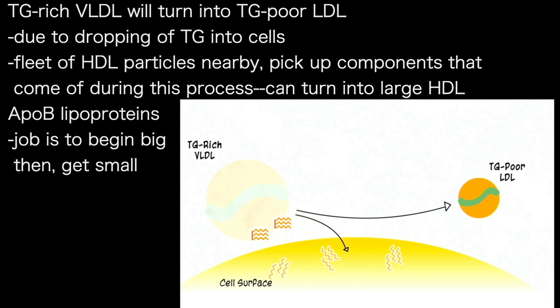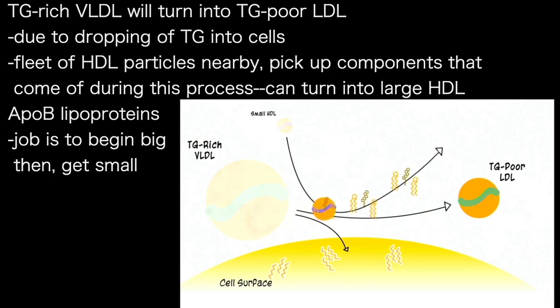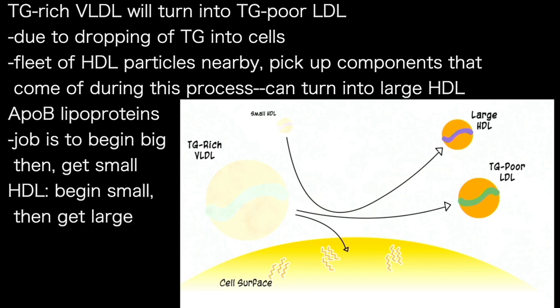There's something important that most people don't know about: there's a fleet of HDL particles nearby that are small, and they actually pick up a number of the components that come off of this process. As the VLDL is shrinking and dropping off those pieces, the pieces picked up by small HDL can ultimately result in large HDL. You could think of ApoB lipoproteins like VLDLs — their job is to start large and get small — whereas the job for HDL is to start small and get large.